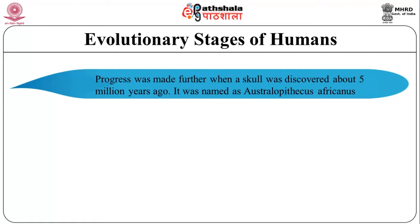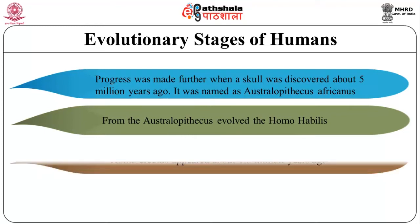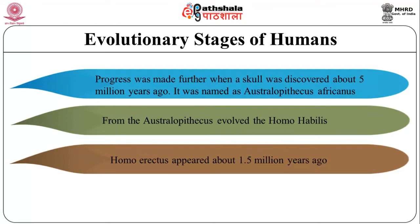Evidence shows they hunted with stones and weapons but essentially ate fruits. From the Australopithecus evolved Homo habilis, the handyman, characterized by having a larger brain than Australopithecus of about 650 to 800 cubic centimeters, who used tools and was bipedal. They probably did not eat meat. Homo erectus appeared about 1.5 million years ago. Its brain capacity increased to about 800 to 1200 cc and they migrated to Asia and Europe. Fossils of Java man and Peking man belonged to Homo erectus. They probably ate meat.